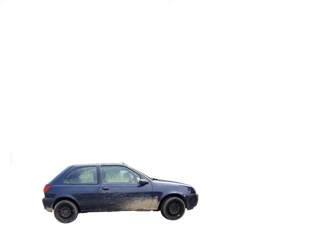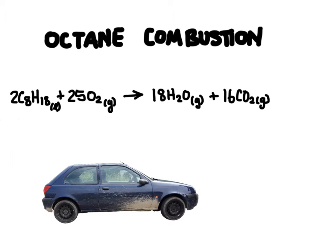Let's try determining the enthalpy change for a chemical reaction. We're going to look at octane, which is a chemical compound in gasoline — this is what your car engine combusts, which produces heat and powers your car. This reaction is exothermic because heat is going to be released. Here's a chemical equation describing the combustion of octane: octane reacts with O₂, and the coefficients represent moles. We start with 2 moles of octane and 25 moles of O₂, producing 18 moles of water and 16 moles of carbon dioxide, along with 5,471 kilojoules of heat.